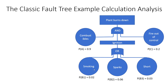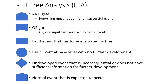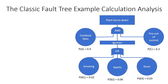Sometimes just one input is enough — for example, either someone is smoking, or there is a spark from metalwork, or a short circuit. Either of those will cause ignition, which is enough to cause the fire. This is the OR gate. You can go back to the video to check the different symbols.